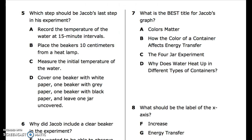Number 5: Which step should be Jacob's last step in his experiment? A. Record the temperature of the water at 15 minute intervals. B. Place the beaker 10 centimeters from the heat lamp. C. Measure the initial temperature of the water. D. Cover one beaker with white paper, one beaker with gray paper, and one beaker with black paper, and leave one jar uncovered.